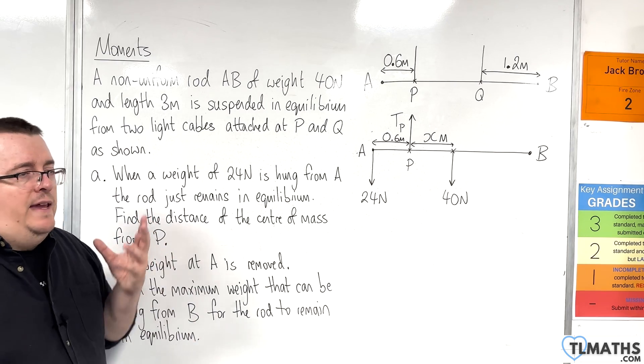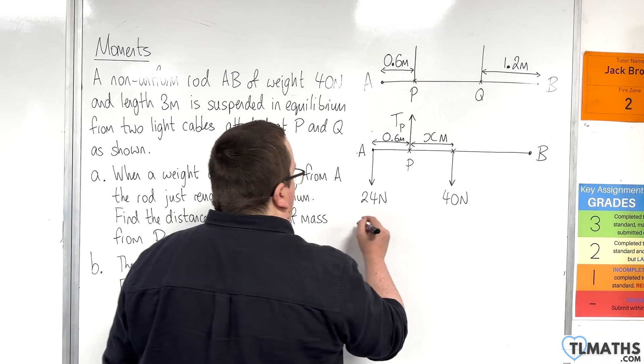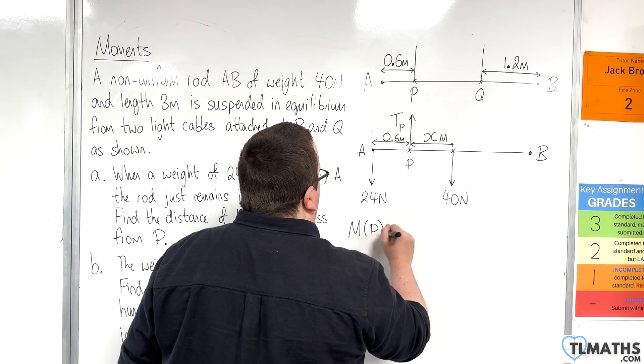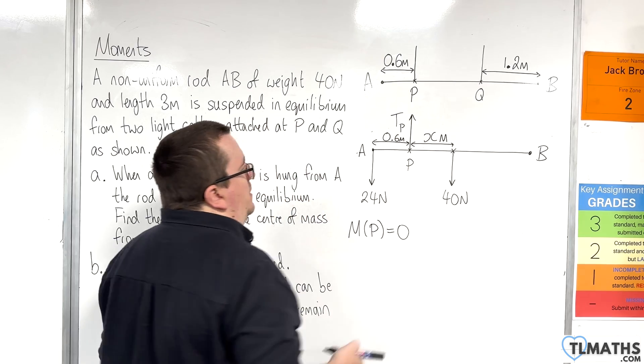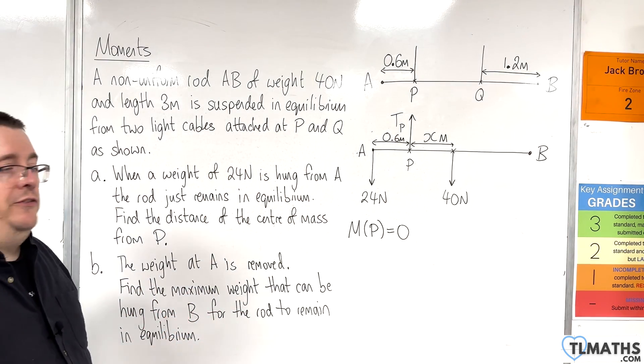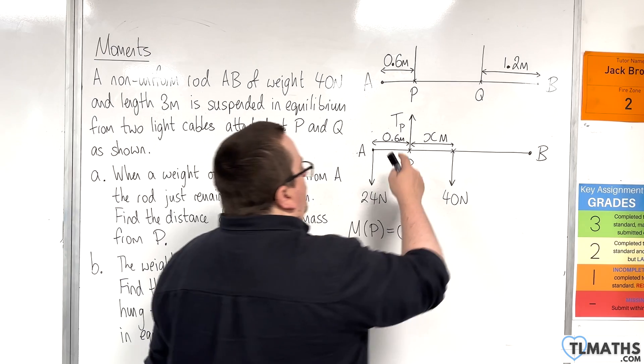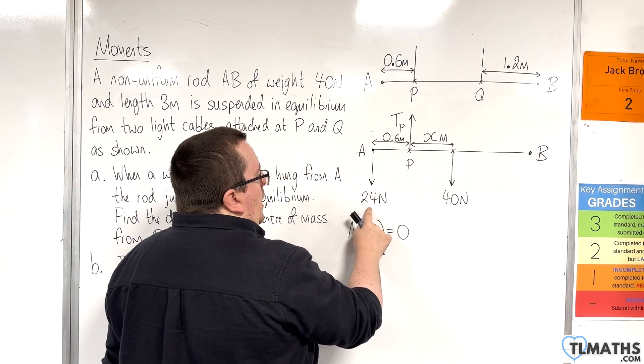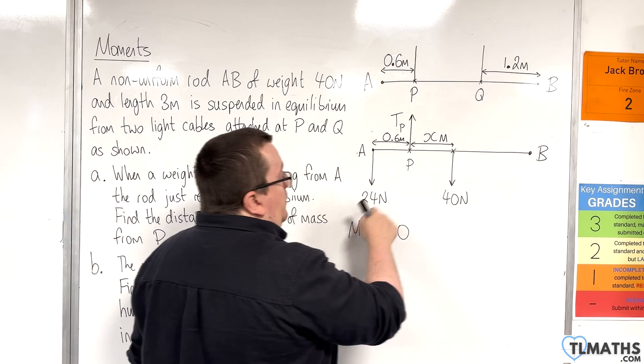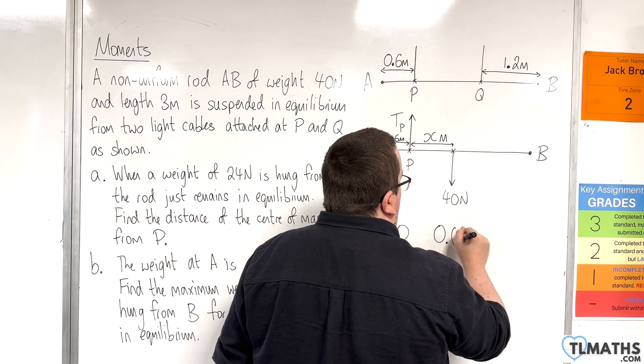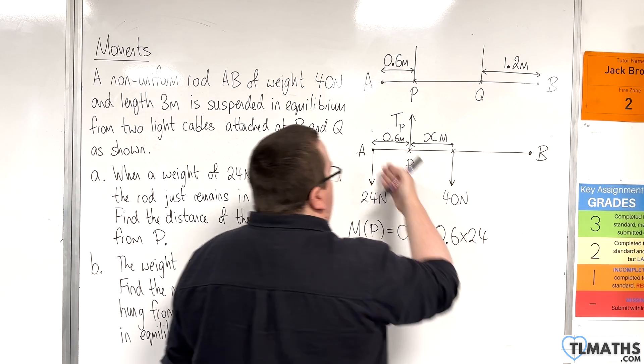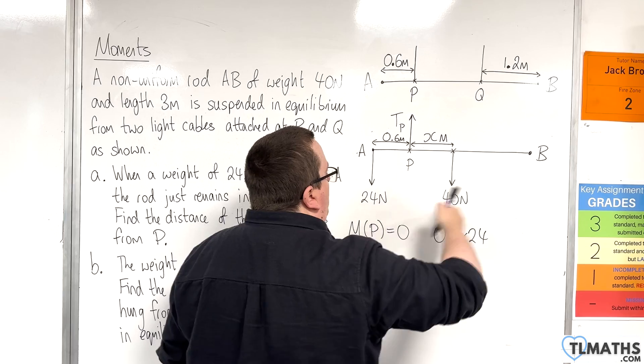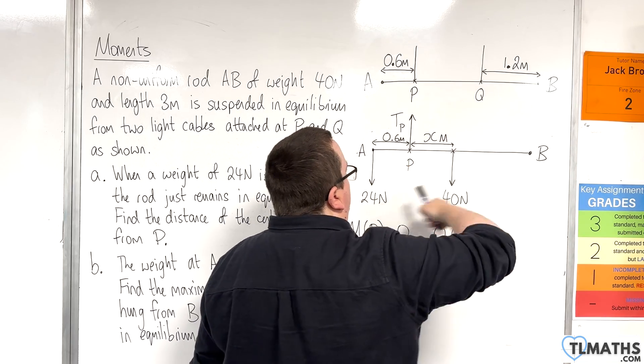So if I take moments from P, that allows me to ignore the tension at P because it's zero distance away. So from P, we are 0.6 metres to the 24 newtons. So 0.6 times 24.